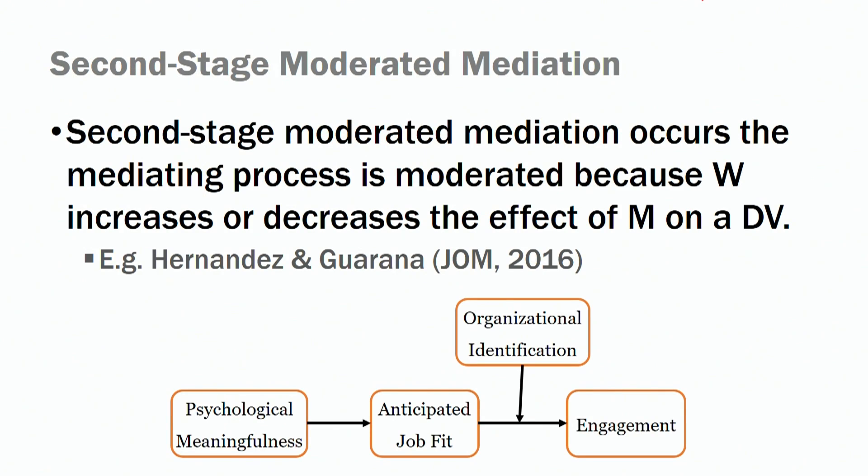The difference between first stage and second stage models is the position of our moderator. In first stage models, the moderator is placed in the first path — the path between our independent variable and our mediator. We are looking for the interaction term of our independent variable and moderator and its effects on our mediator.